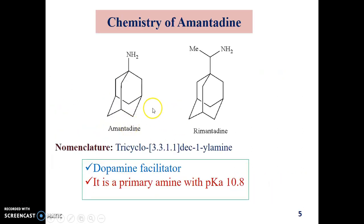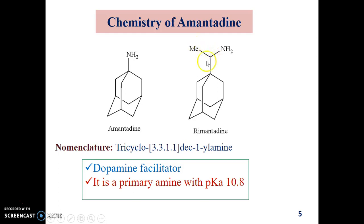Coming to the chemistry of amantadine — this is the structure of amantadine. It has an adamantane ring system with a primary amine group. One analog of amantadine is rimantadine. The structural difference is that in amantadine it is a primary amine directly attached, whereas in rimantadine the adamantane ring system and the nitrogen are linked by a carbon bearing a branched ethyl group. Amantadine is a dopamine facilitator and a primary amine with a pKa value of 10.8.